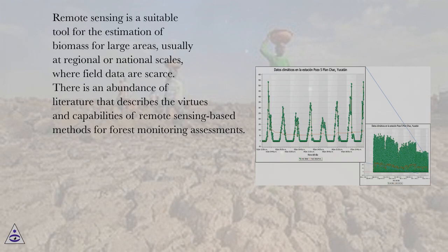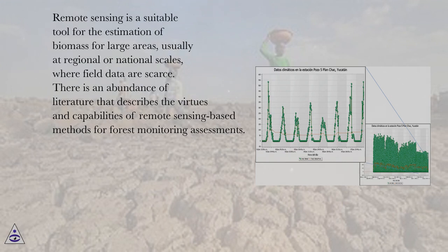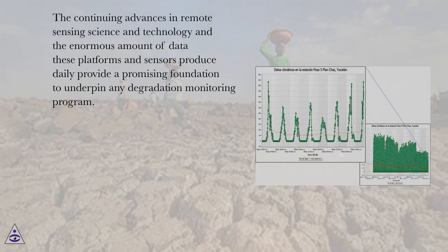Remote sensing is a suitable tool for the estimation of biomass for large areas, usually at regional or national scales, where field data are scarce. There is an abundance of literature that describes the virtues and capabilities of remote sensing-based methods for forest monitoring assessments. The continuing advances in remote sensing science and technology and the enormous amounts of data these platforms and sensors produce daily provide a promising foundation to underpin any degradation monitoring program.